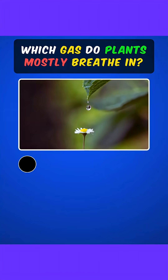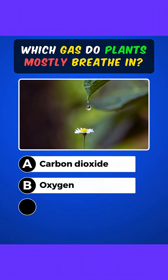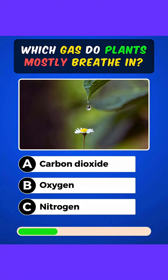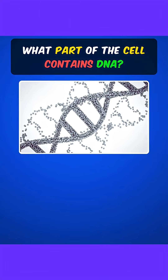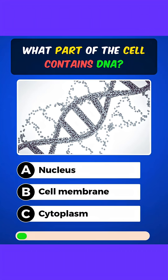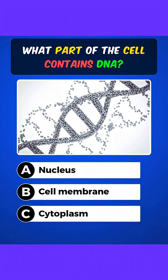Which gas do plants mostly breathe in? Answer A: Carbon dioxide. What part of the cell contains DNA? Answer A: Nucleus.